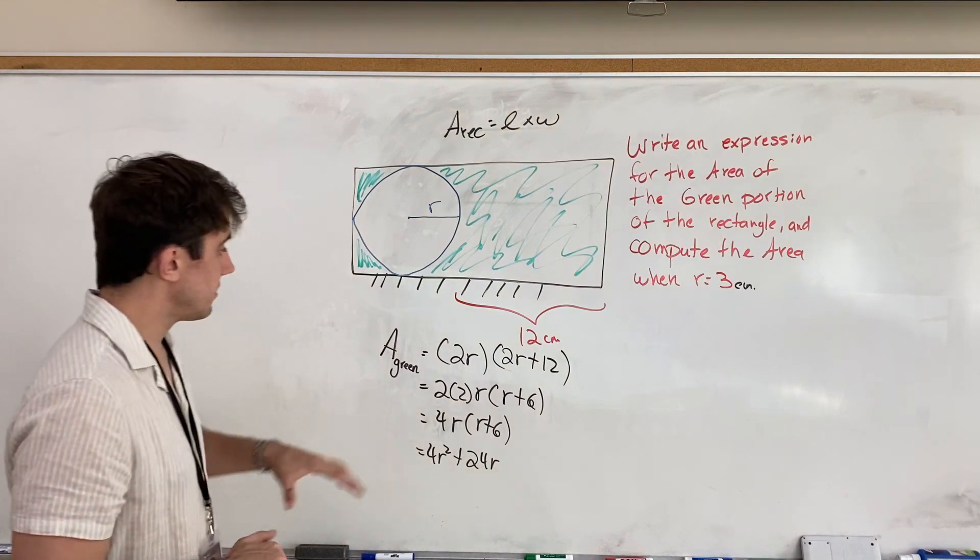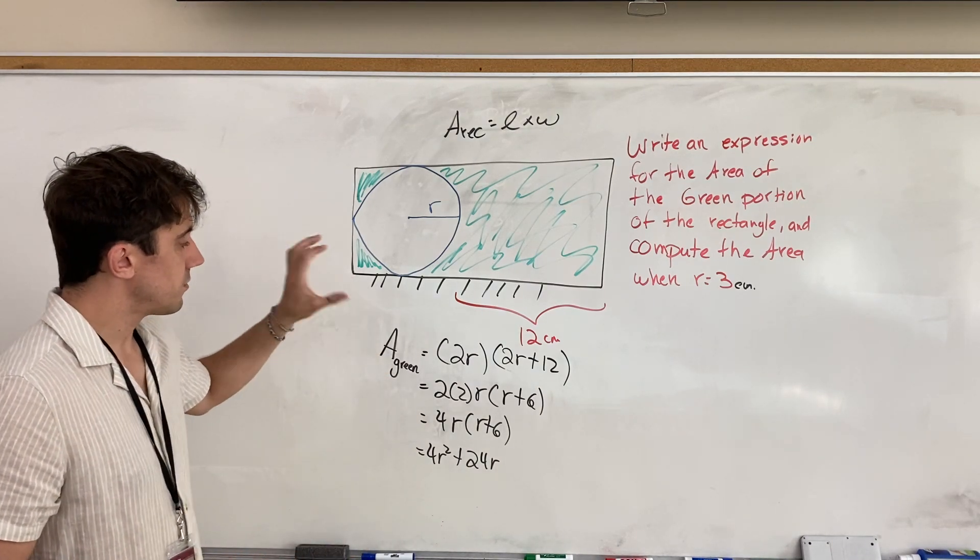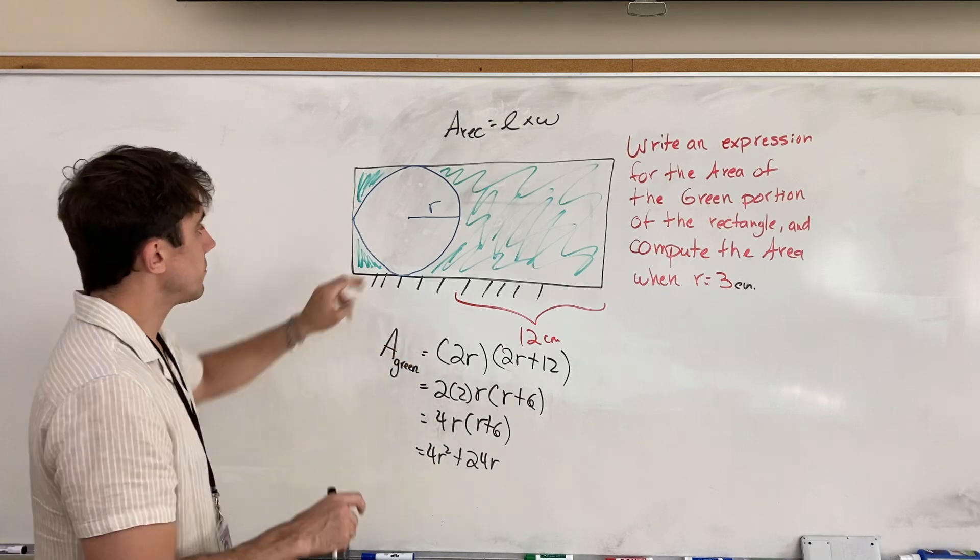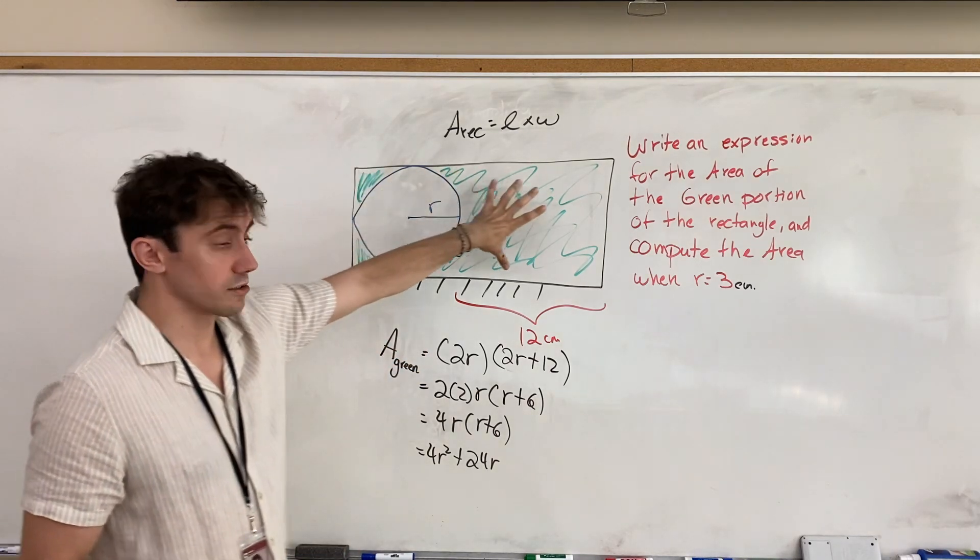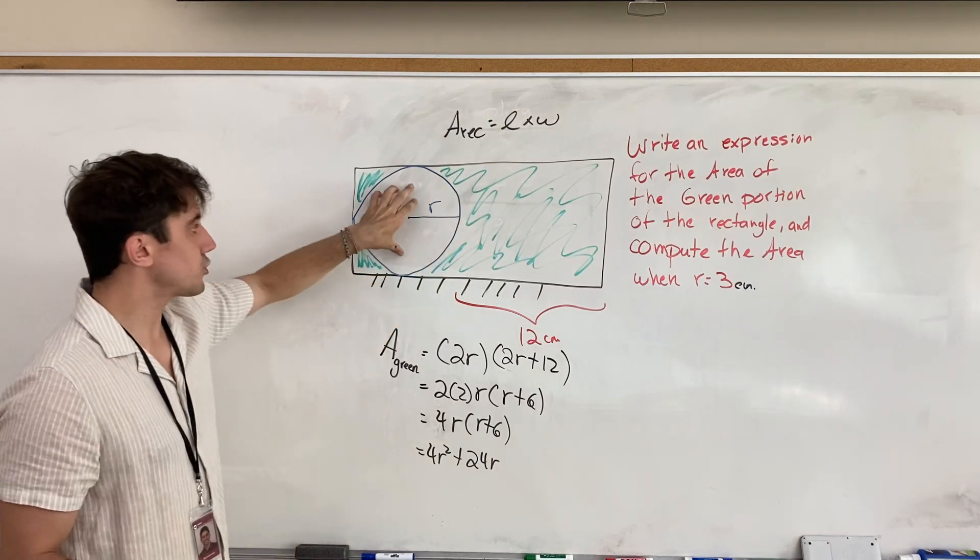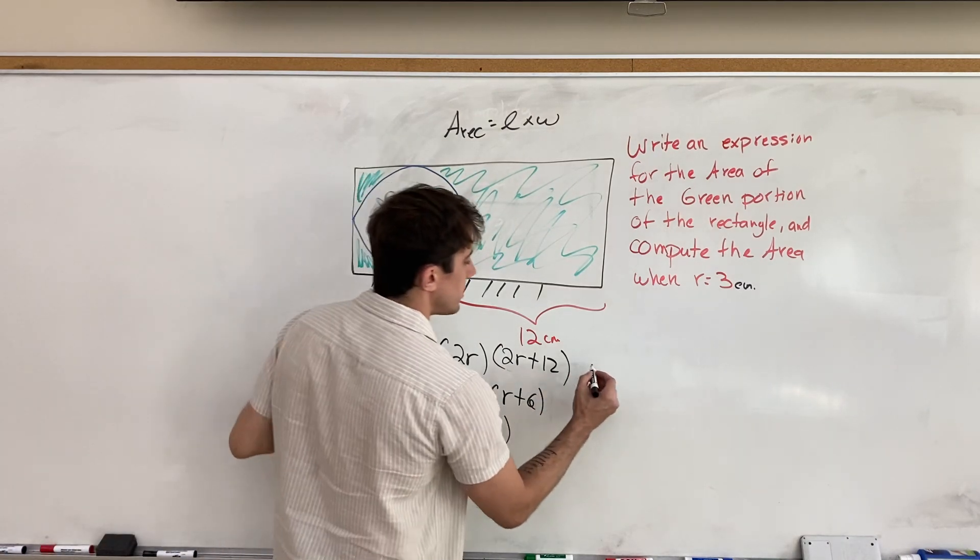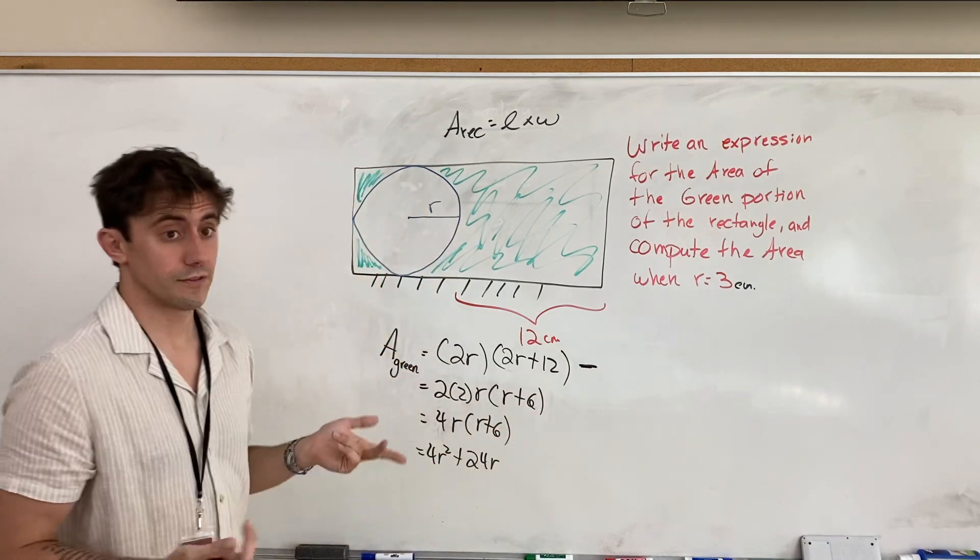Now, that's just the area of the rectangle. Now, the area of the circle is empty. It's not colored green. And so we need to subtract this area.